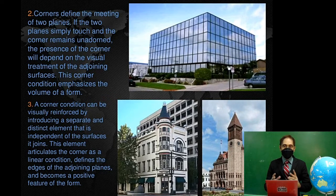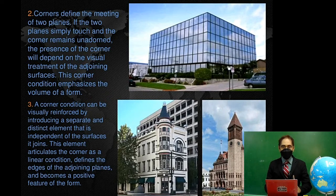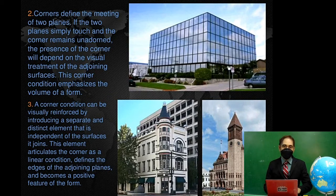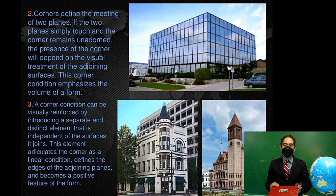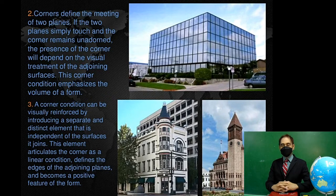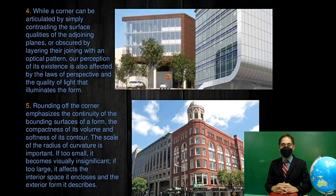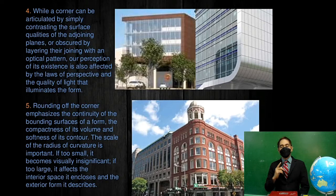A corner condition can be visually reinforced by introducing a separate and distinct element that is independent of the surfaces it joins. This element articulates the corner as a linear condition, defines the edges of the adjoining planes, and becomes a positive feature of the form. Observe how architects design each corner of the building — there are many different ways to do it: there is a curve, a sharp edge, or a slanted treatment on every corner.